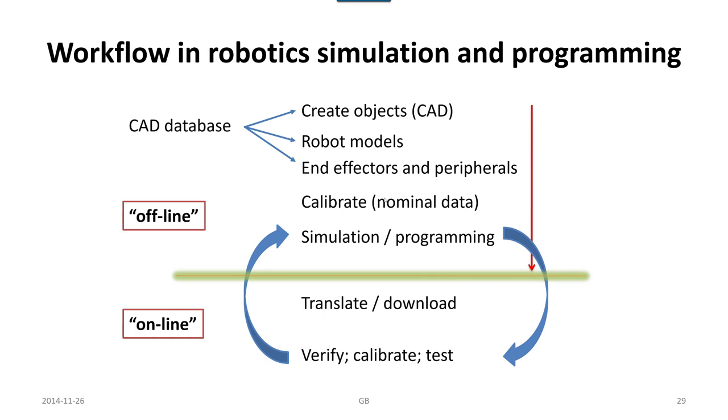End effectors could be fingers to the grippers and similar things. In some cases we can model it directly in the robot simulator or otherwise we use a normal traditional CAD system and then import it into the simulator.